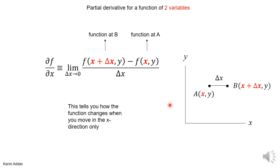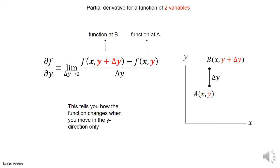We want to define the partial derivative for a function of two variables. You go to point a with coordinates x and y, then go to point b with coordinates x plus delta x and y — keeping y the same but increasing x a little bit. You find the value of the function at point b, subtract the value at point a, divide by delta x, and take the limit when delta x goes to zero. This is very similar to the single-variable derivative, but y is kept constant throughout.